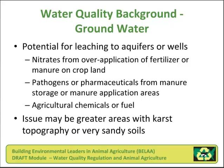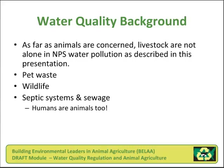Water quality background — groundwater. What we're looking at here is the potential for pollutants to leach through the soil and get into aquifers or wells. Examples may include nitrates from the over-application of fertilizer or manure on cropland, pathogens or pharmaceuticals from manure storage or application areas, as well as agricultural chemicals or fuels. This issue may be greatest in areas with karst topography or very sandy soils, where there are conduits or easy pathways for pollutants to leach from the soil surface into wells or groundwater.